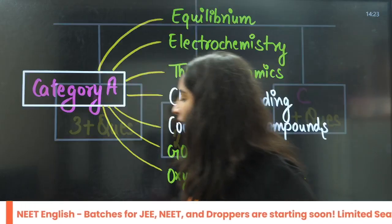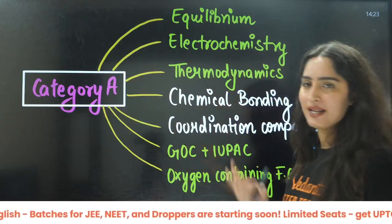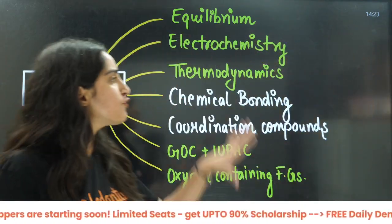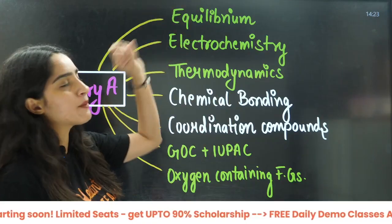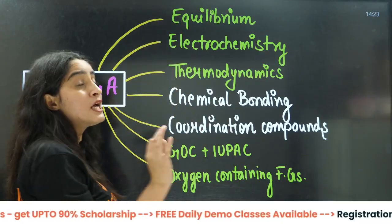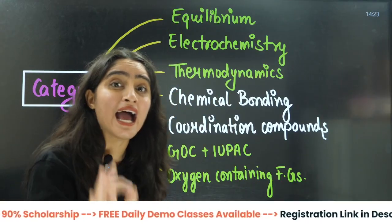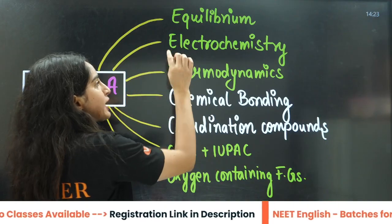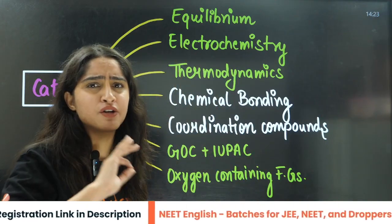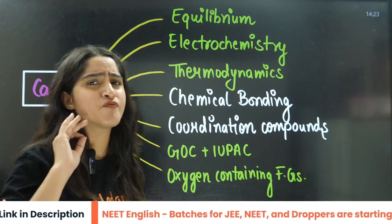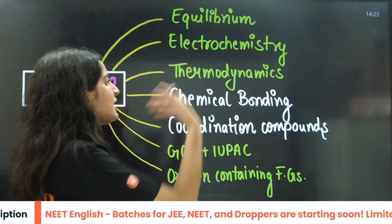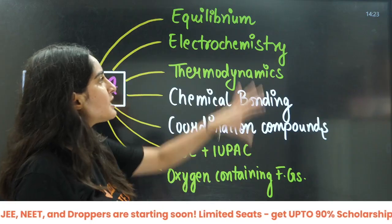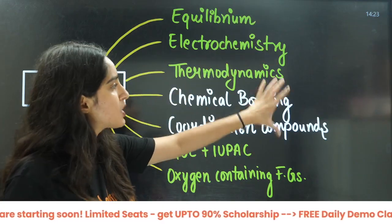In category A, from physical chemistry, you have equilibrium — especially ionic equilibrium, which is very important. Then you have electrochemistry, Nernst equation, and redox reaction, which are very important. Then you have thermodynamics. These are the chapters from physical chemistry in category A.